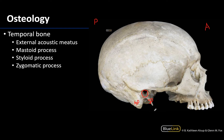The last thing I want you to identify in this view is the zygomatic process of the temporal bone. The zygomatic process is going to form the majority of the zygomatic arch. This whole area is the zygomatic arch and it will also include the temporal process of the zygomatic bone.